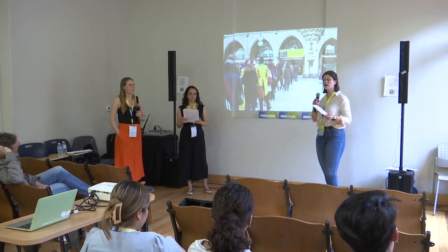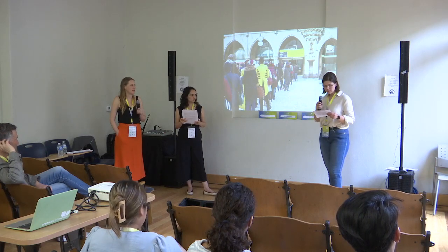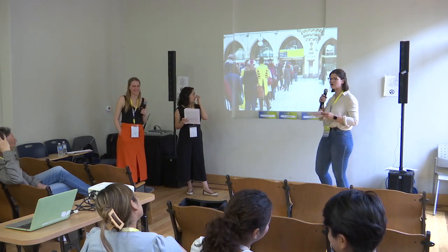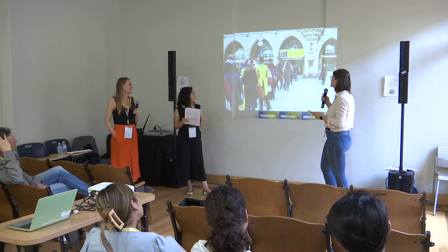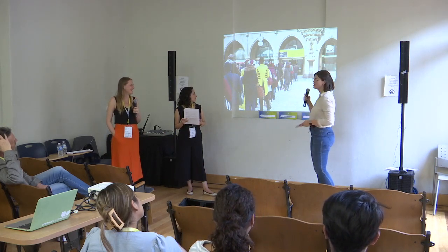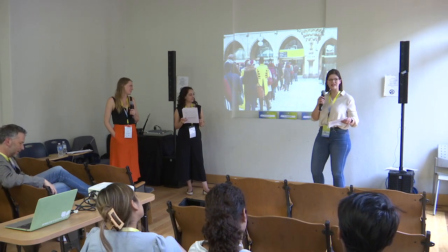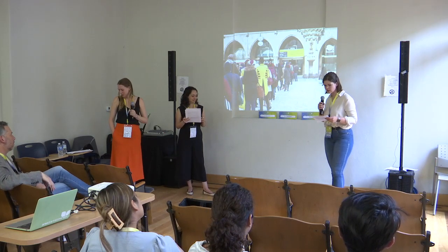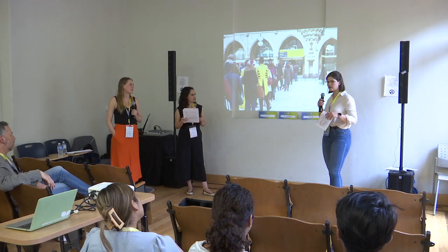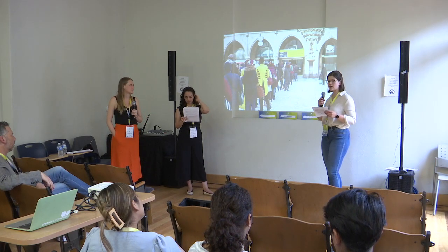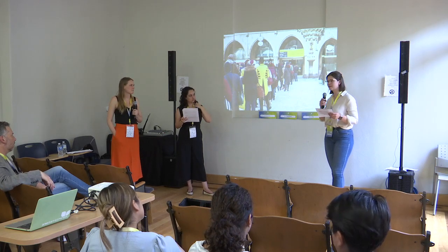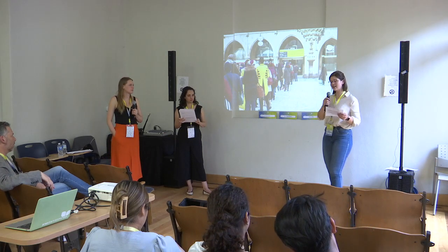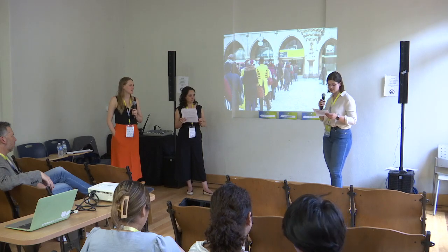1.8 million citizens actually waited in front of city halls for hours — and it was snowing. People dressed up as bees to get people informed. This is also interesting because one of the biggest problems of direct democracy is getting people informed, and somehow they managed to get 1.8 million people informed that they had the right to sign in for the citizens' initiative.